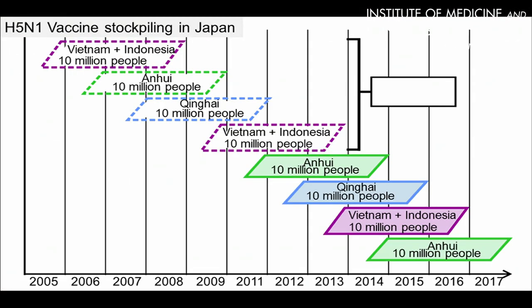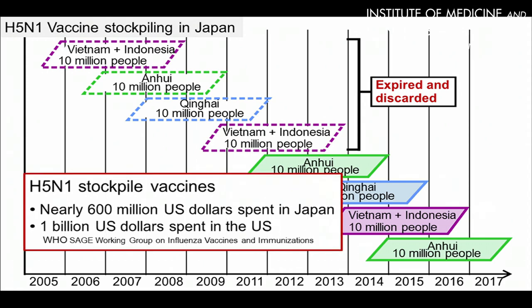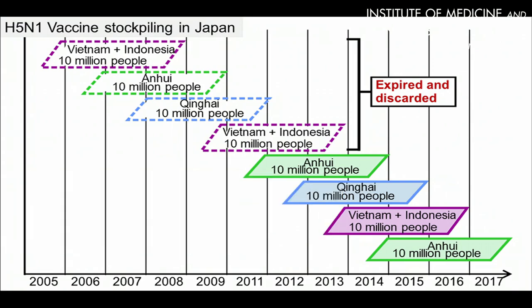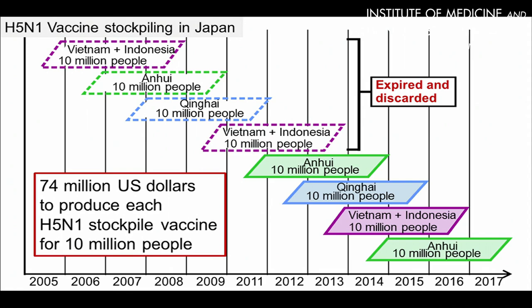First, vaccine stockpile. Japan started H5N1 vaccine stockpiling in 2005. These vaccines drop titers, so they expire and have been discarded. Japan spent nearly 600 million U.S. dollars for this stockpiling, and the U.S. has spent 1 billion U.S. dollars. These vaccines expire and must be replenished — for 10 million people, each lot of H5N1 vaccines costs 74 million U.S. dollars to replenish.